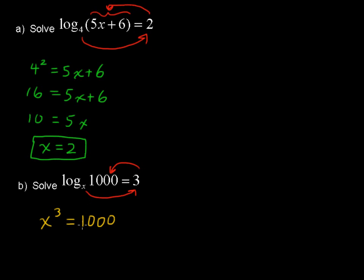There's a couple of ways you could solve this. You could take the third root of each side to get the value of x and type in 1,000 raised to the third root or raised to the 1 third power in your calculator. That would be one way to get it.